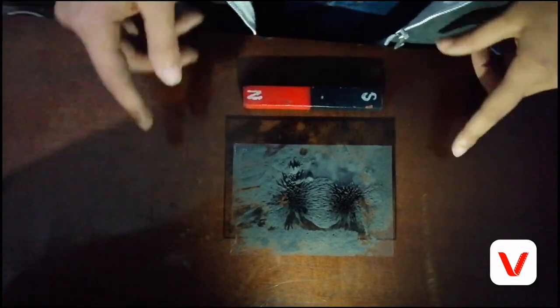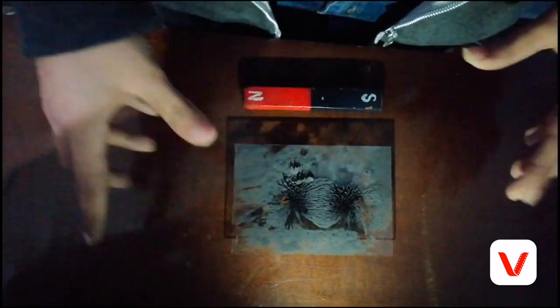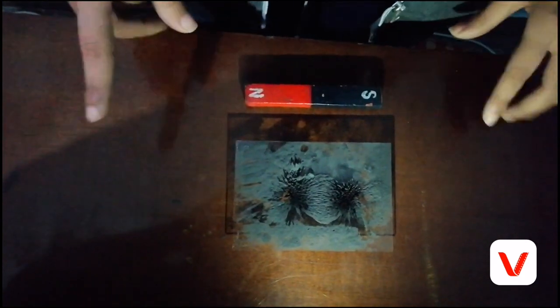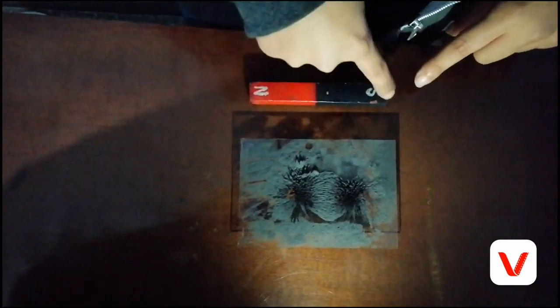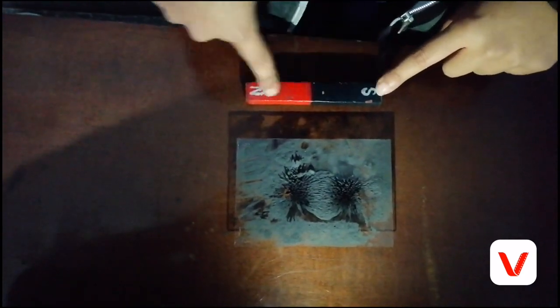The iron filings arrange themselves in a pattern around the magnet, which is called the magnetic field. The magnetic field lines always start from the north pole to the south one, and the direction inside the magnet is from the south pole to the north one.